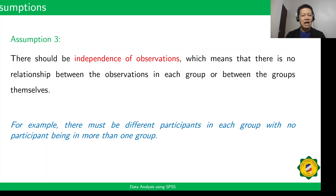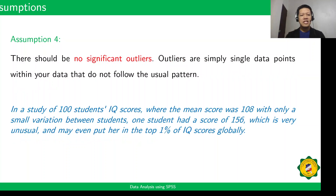The next assumption is that there should be independence of observations, meaning there is no relationship between the observations in each group or between the groups themselves. The fourth assumption is that there should be no significant outliers. Outliers are simply single data points within your data that do not follow the usual pattern.